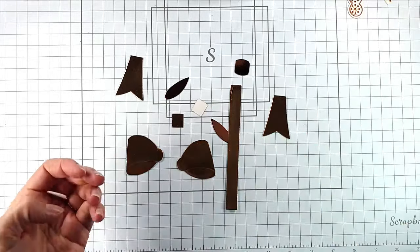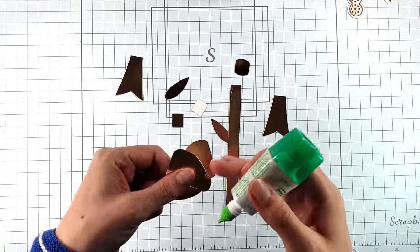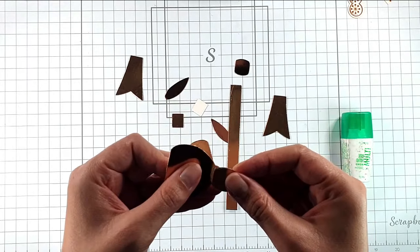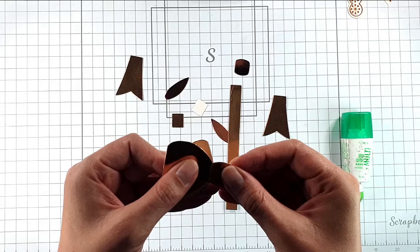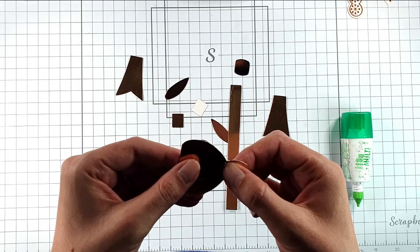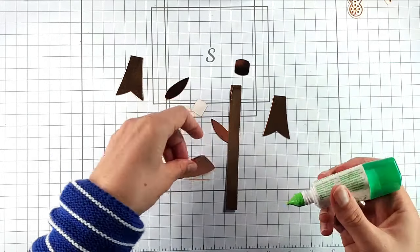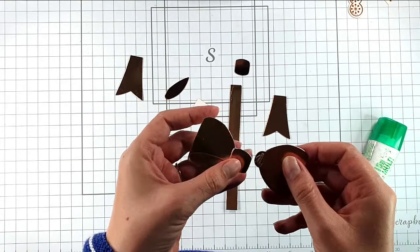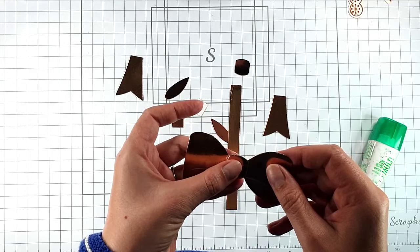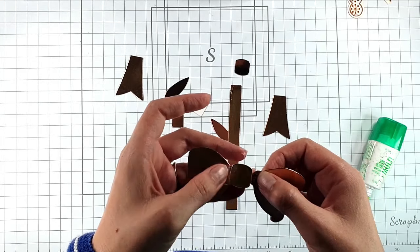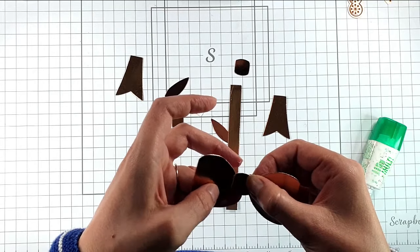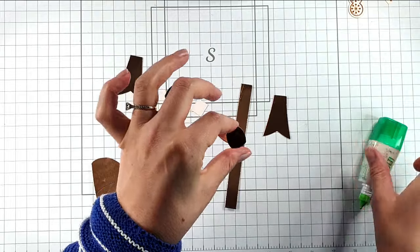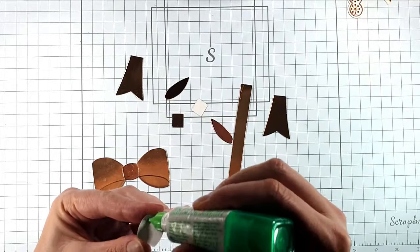So I've created this bow in copper cardstock. I've actually got two shades of copper cardstock. I just happen to have them both in my stash, and so I've used both shades. So I'll show you where I've used the darker shade when I get to it. So this is the lighter of the two shades. If you don't have two shades, you could always use like gold and copper, or you could use copper with a brown or something like that.